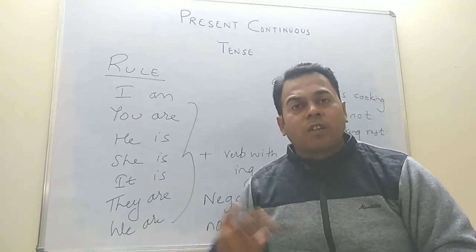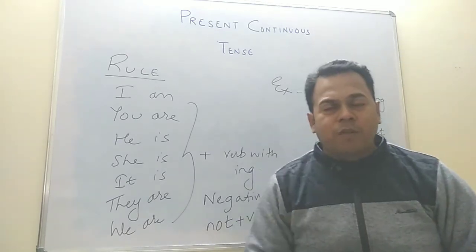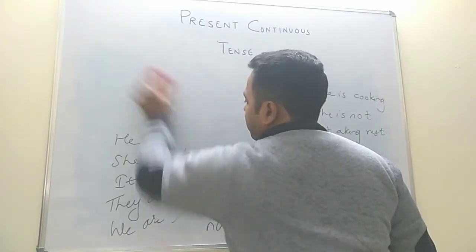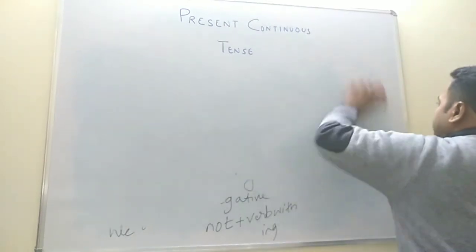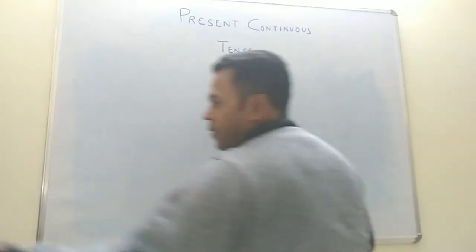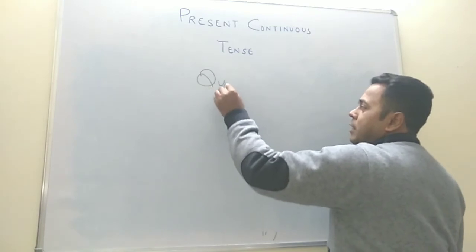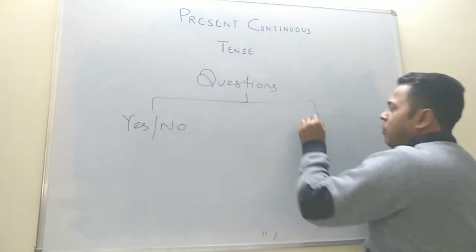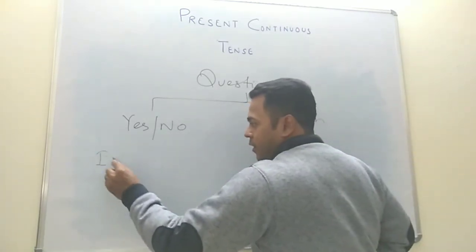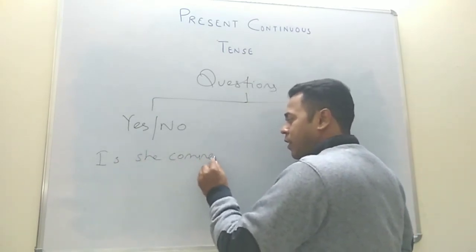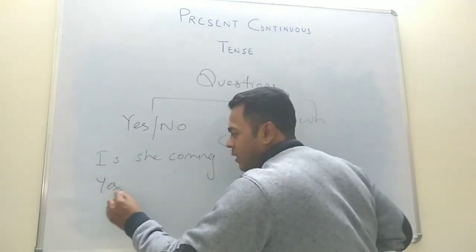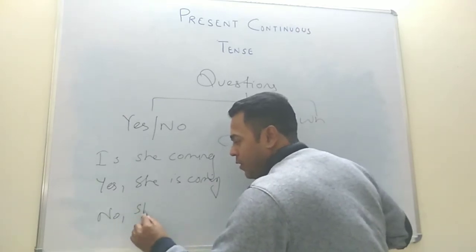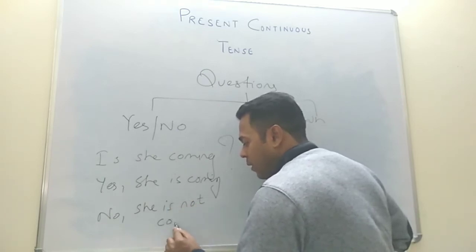Now let's discuss questions in present continuous tense. We have two types of questions: yes/no questions and WH questions. For yes/no questions, for example: 'Is she coming?' — the answer should be 'yes, she is coming' or 'no, she is not coming.'